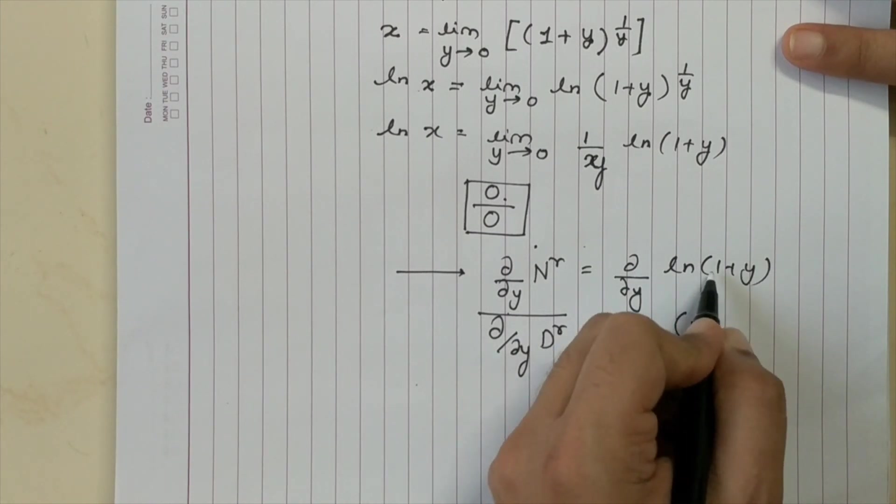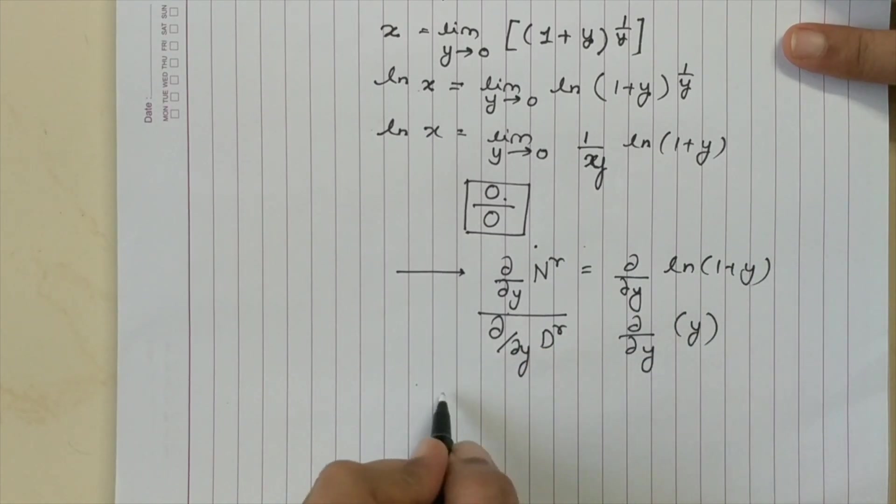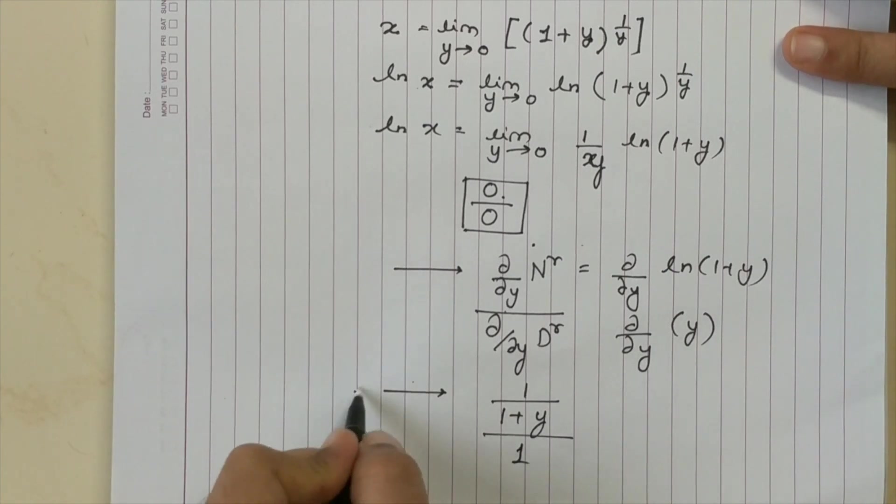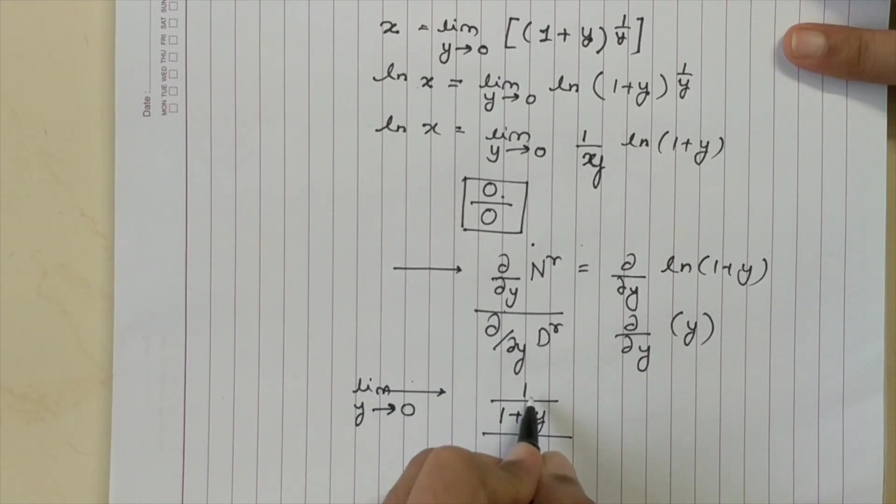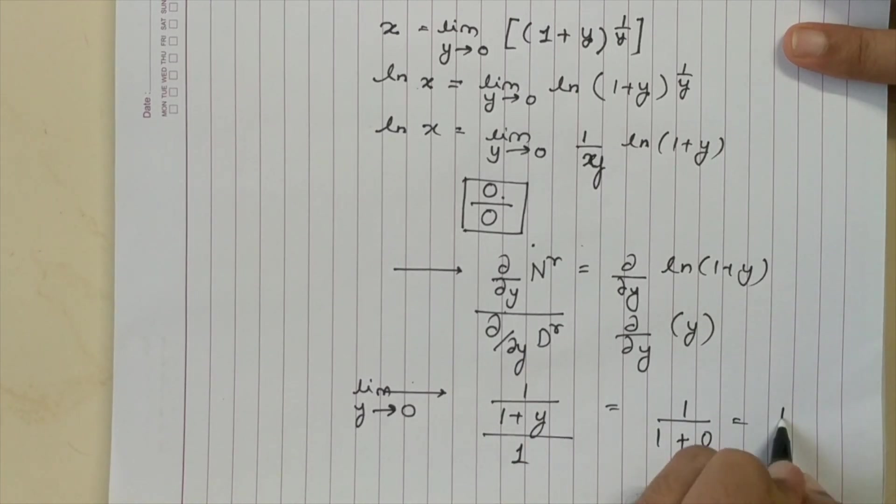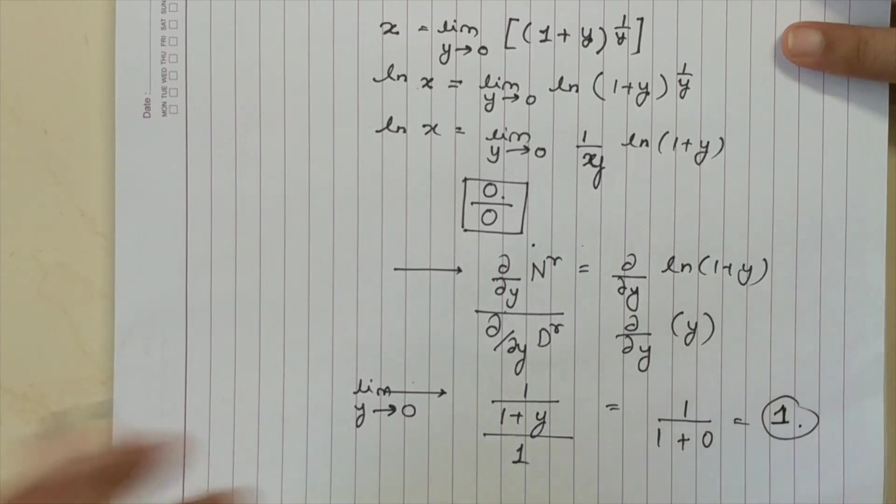The differentiation of ln 1 plus Y with respect to Y is 1 upon 1 plus Y and this term is 1. Now when you apply limit Y tending to 0, if this is 0 this equation becomes 1 upon 1 plus 0 which is equal to 1.